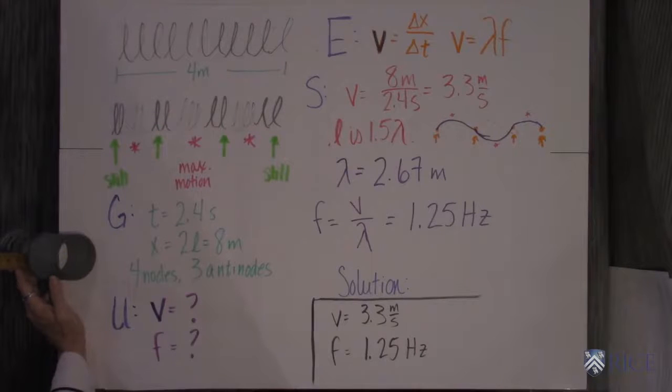The first part of the problem asks you what the velocity of that wave is. And then the second part of the problem says you keep that slinky stretched at four meters and you create a standing wave on it and what is the frequency of that standing wave.